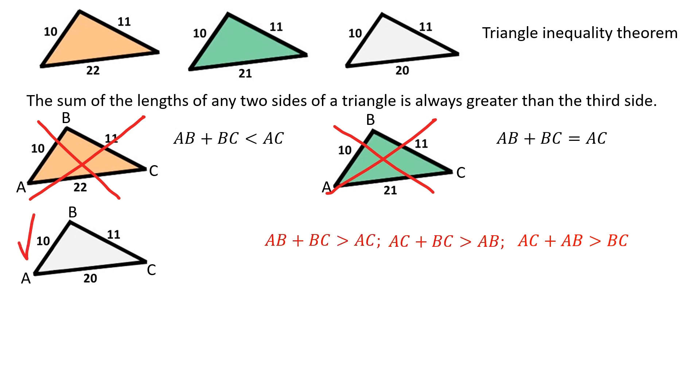Therefore, we can form a triangle using these parameters. The gray shape is a triangle.